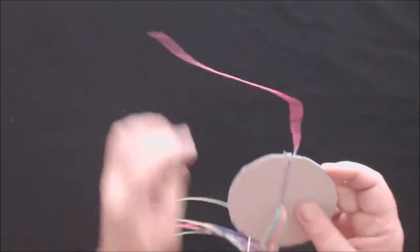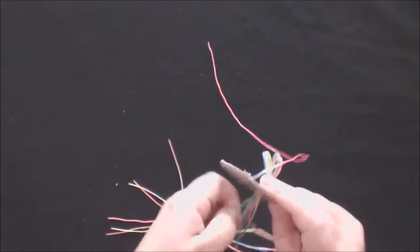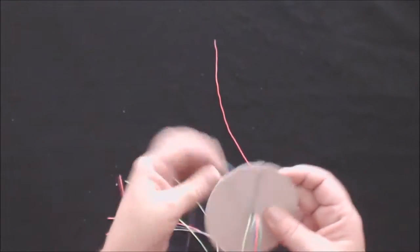Place a strand in each of the slits that you have cut into the circle.